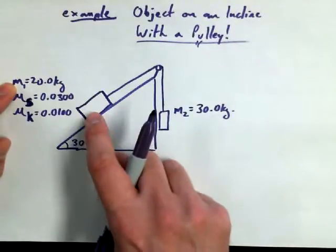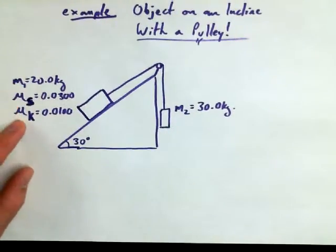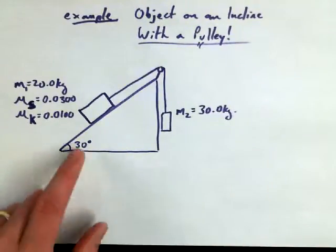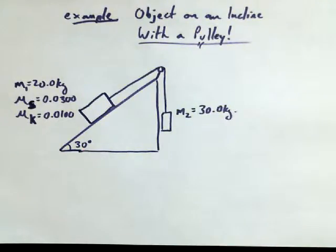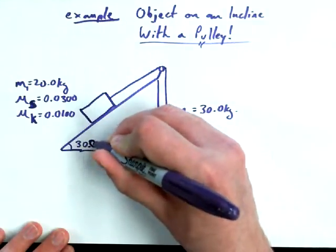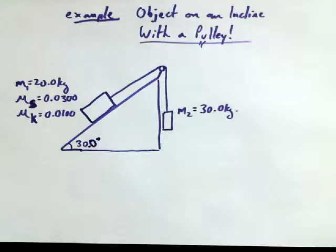The mass on the surface is 20 kilograms, the hanging mass is 30 kilograms, and the static friction and kinetic friction between the mass on the incline is 0.03 and 0.01 respectively. We're sitting at 30 degrees. For significant figures, I'll say it's 30.0 degrees so we have three sig figs.